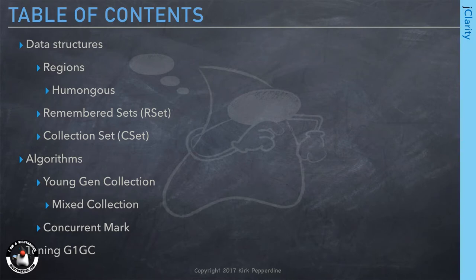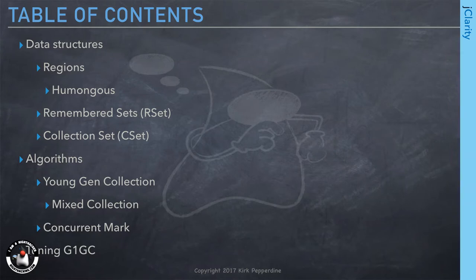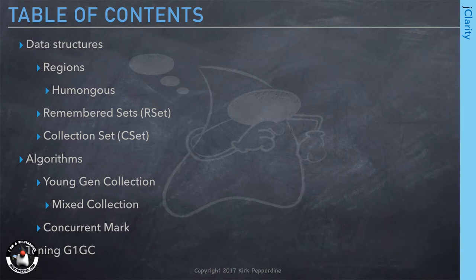The things you need to know—we can go much deeper, and there are talks that go immensely deep. But the important thing to look at is that there are a number of data structures: regions, remembered sets, and collection sets. In terms of algorithms, we have allocators—or mutators, which is a fancy word meaning application threads. We'll use 'mutator' from now on just so we can sound clever. Then we have young gen collections, mixed collections, and concurrent mark.